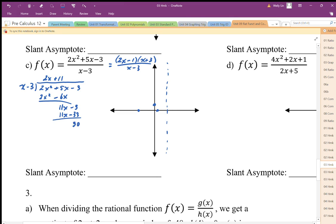So my remainder is positive 30. That means when I have my slant asymptote, I should be along this positive diagonal, which looks like I am. My slant asymptote is y equals 2x plus 11.